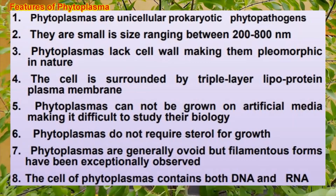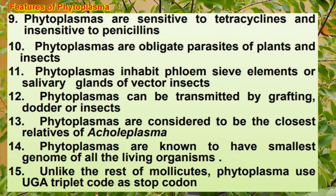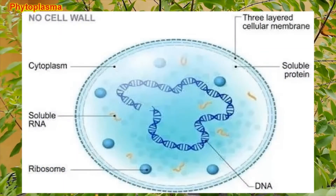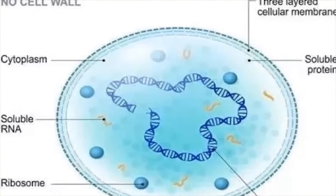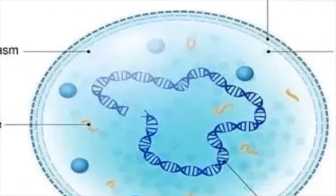Phytoplasma, or mycoplasma-like organisms, are unicellular prokaryotic organisms. They range in size from 200 to 800 nanometres. They are pleomorphic because they don't have a definite shape, they lack a cell wall, and they are bound by a triple layer of lipoprotein plasma membrane. The phytoplasmas are obligate parasites. You can see the cell of a mycoplasma which has a triple-layered cell membrane, DNA as the genetic material, no cell wall, and some soluble RNA molecules and ribosomes within the cytoplasm.